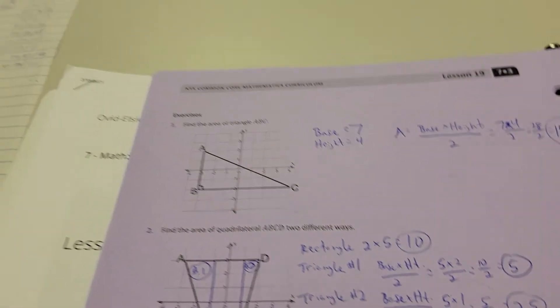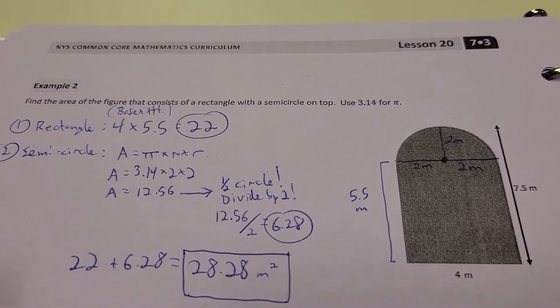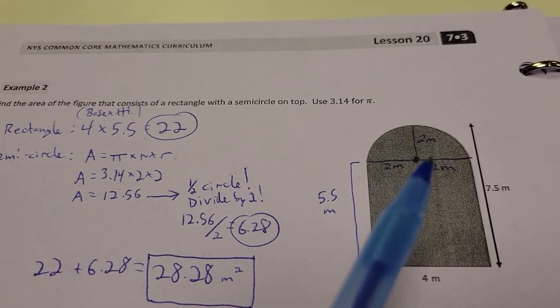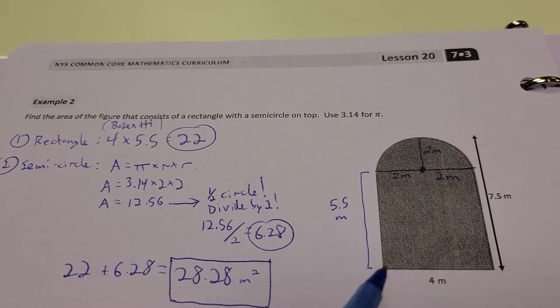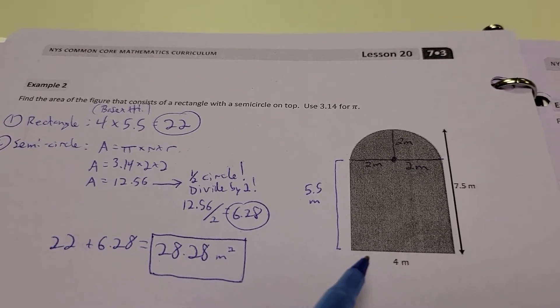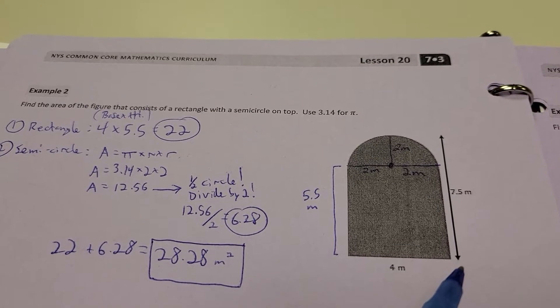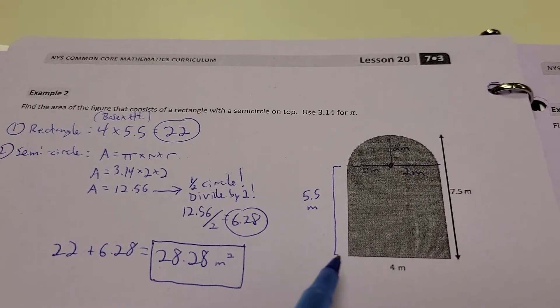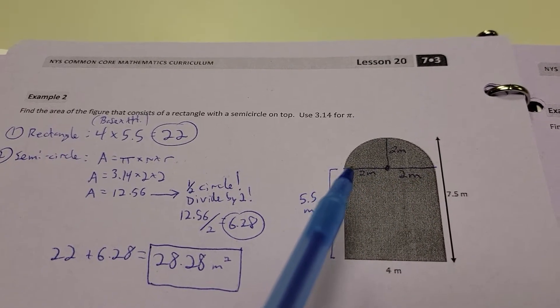Alright, and a couple more examples is out of Lesson 20 now for using some of our circle information. Find the area of the figure that consists of a rectangle with a semicircle on top. It's like the key area on a basketball court, kind of like that. But anyways, we know from the picture that this is 4 and this whole distance is 7.5. Well, it's not very helpful to me, so I've got to break my picture down a little bit. If this is 4, then the top of this rectangle, or bottom of the semicircle, is also going to be 4.